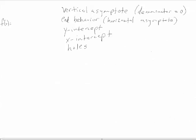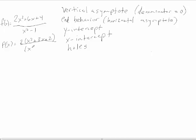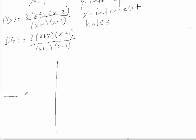Now let's look at another function: f(x) = (2x² + 6x + 4) / (x² − 1). We're going to turn this function into a graph, again looking at vertical and horizontal asymptotes, x and y-intercepts, and any potential holes. First, we need to get this function into factored form, giving us 2(x + 2)(x + 1) over (x + 1)(x − 1).